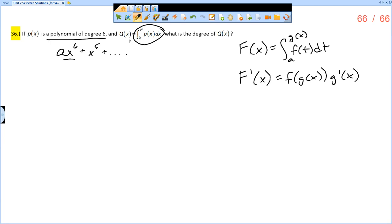So that means if I have Q(x) here, Q'(x) would be what? Well, we're going to take x² and plug it in for x there. So I get P(x²) times the derivative of x², which is 2x.